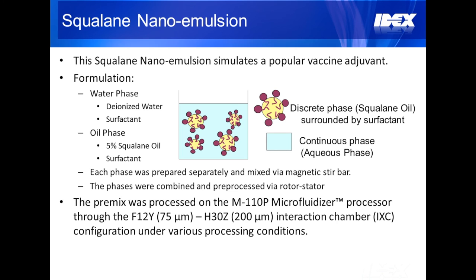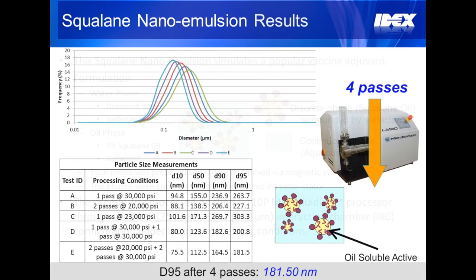At this stage, the goal is to create a distribution that both effectively passes through the sterile filter and is reproducible. Here are the results achieved with the microfluidizer processor at varying pressures and number of passes. It is important to note not only how tight the distributions are, but also how small the D95 particles are, because these are the particles that will prevent material from passing through the sterile filter.